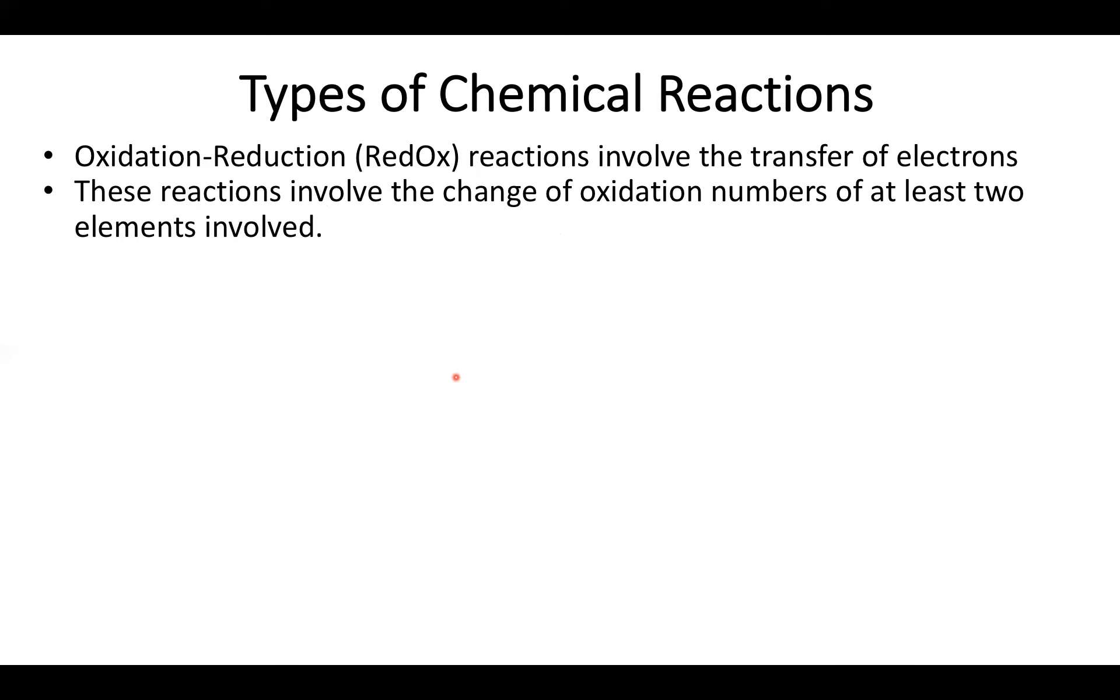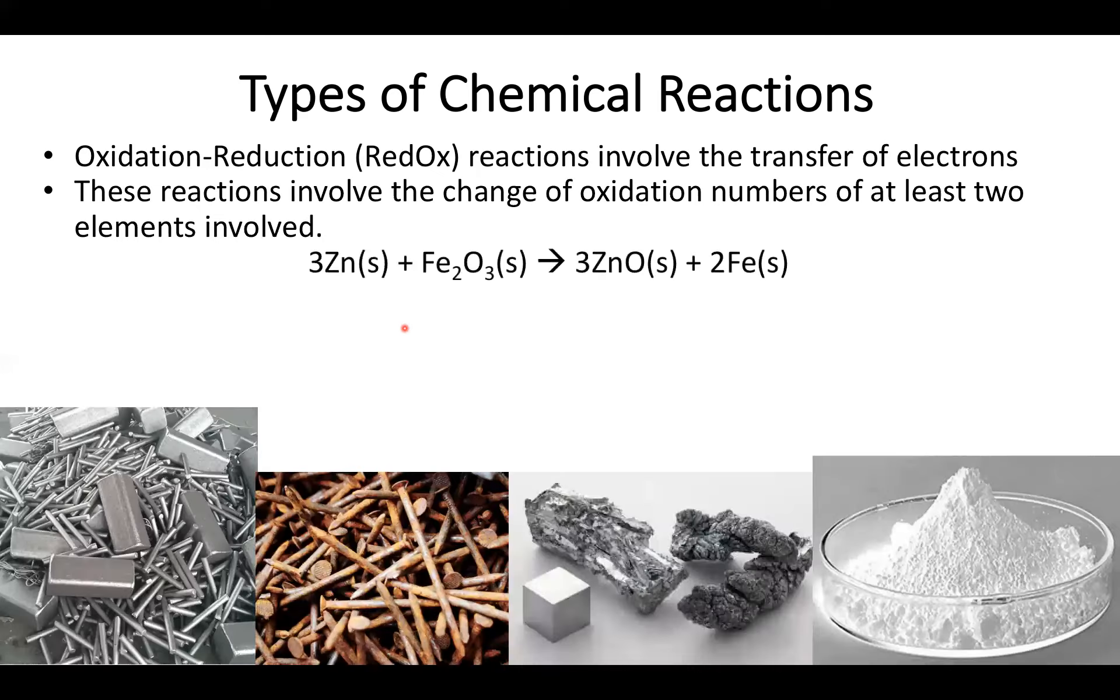Let's go ahead and see what this looks like. Let's say I want to combine zinc with rust, iron oxide. Well, it turns out that this can produce zinc oxide, which you may know is a component of some sunscreens, and good old solid iron.